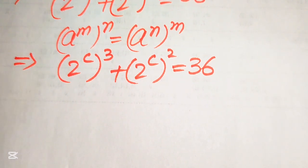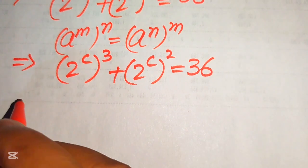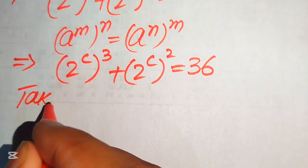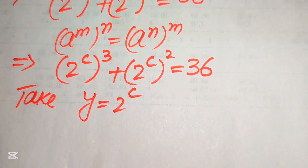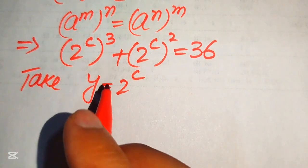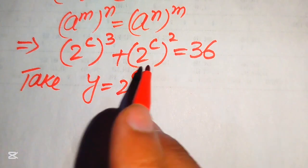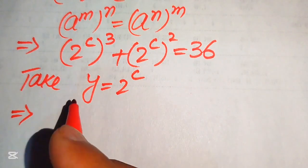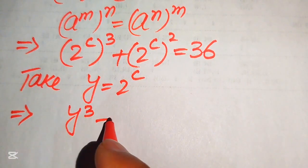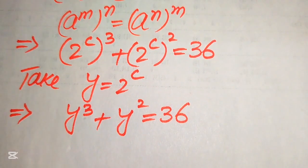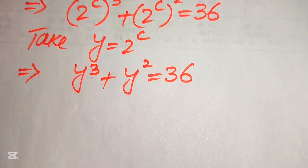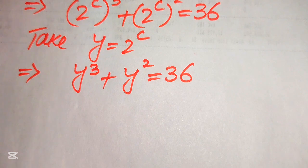In the next step, we take the substitution y equals 2 to the power of c. When we substitute y equals 2^c into our equation, it is written as y cubed plus y squared equals 36. This equation is now cubic in the variable y, and we can find the values of y.